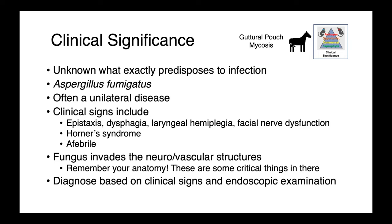In horses, Aspergillus is associated with guttural pouch mycosis, most commonly Aspergillus fumigatus. We don't have a good appreciation of what exactly predisposes a horse to develop these infections. Guttural pouch mycosis is oftentimes a unilateral disease, and clinical signs can include epistaxis, dysphagia, laryngeal hemiplegia, facial nerve dysfunction, or Horner syndrome — all neurological deficiencies associated with infection in the region of cranial nerves within the guttural pouch. These animals are typically afebrile, though as the fungus invades neural or vascular tissues, we can see associated signs and potentially very rapid death.